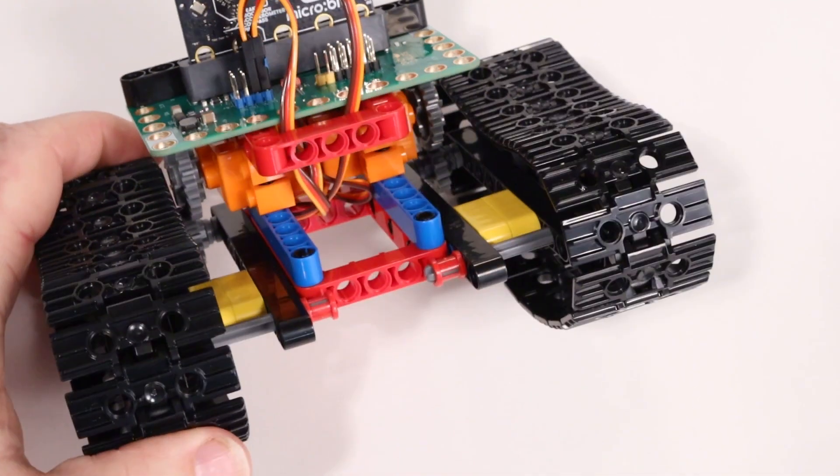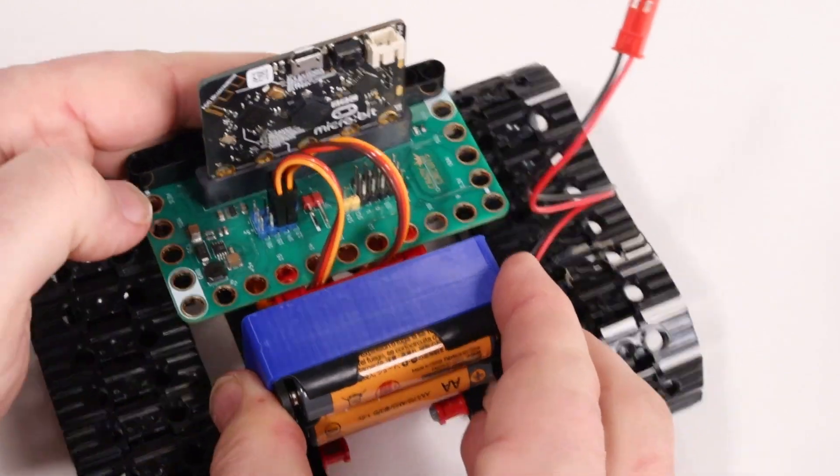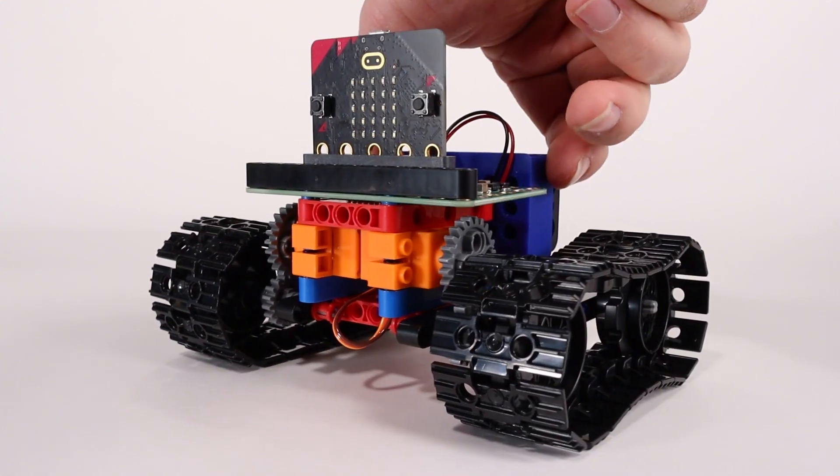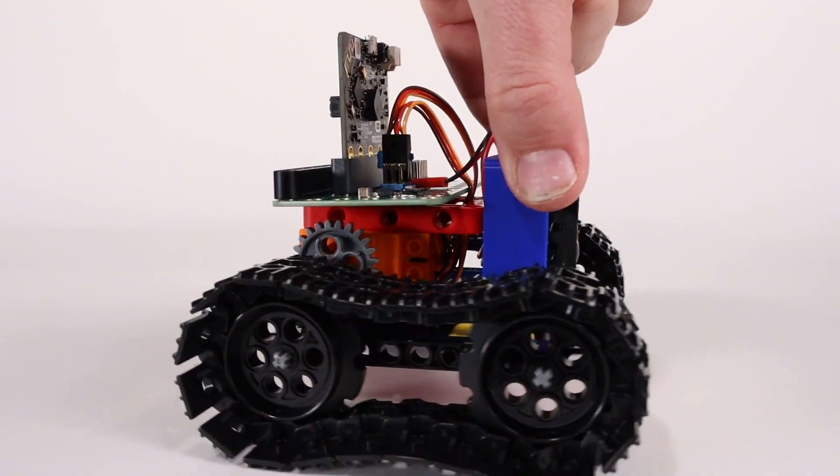The battery pack snaps in place on the back of the red frame, pretty much like a backpack. Congratulations, you just completed the physical assembly of the rover tank. Looks pretty cool, doesn't it? But it's not going anywhere yet.